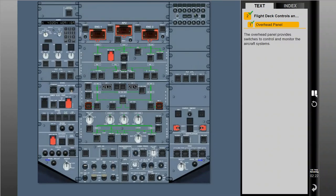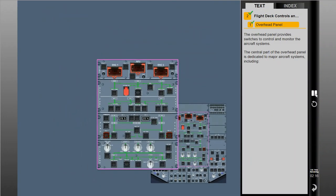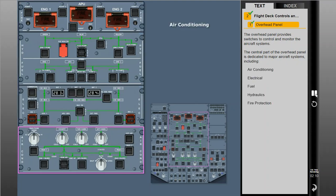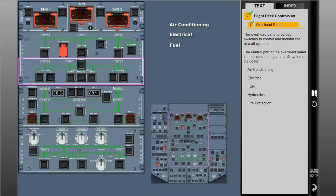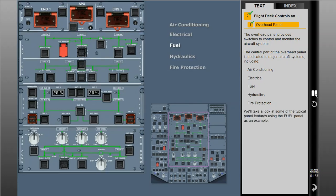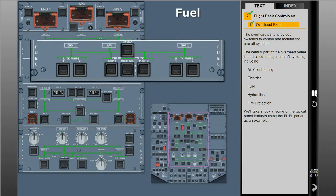The overhead panel provides switches to control and monitor the aircraft systems. The central part of the overhead panel is dedicated to major aircraft systems including air conditioning, electrical, fuel, hydraulics, and fire protection. We'll take a look at some of the typical panel features using the fuel panel as an example.